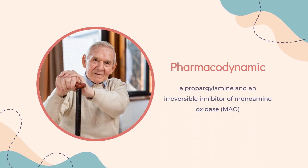Pharmacodynamics. Rasagiline is a propargylamine and an irreversible inhibitor of monoamine oxidase (MAO). MAO, a flavin-containing enzyme, regulates the metabolic degradation of catecholamines and serotonin in the CNS and peripheral tissues. It is classified into two major molecular species, A and B, and is localized in mitochondrial membranes throughout the body in nerve terminals, brain, liver, and intestinal mucosa. MAO-A is found predominantly in the GI tract and liver and regulates the metabolic degradation of circulating catecholamines and dietary amines. MAO-B is the major form in the human brain and is responsible for the regulation of the metabolic degradation of dopamine and phenylethylamine.